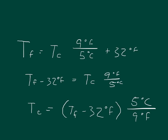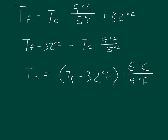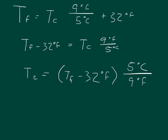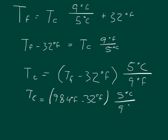You have to remember to put this in parentheses because you're distributing — multiplying both terms by 5 over 9. Since both terms are in degrees Fahrenheit, they cancel out to leave us in degrees Celsius. Plugging in the values: the temperature in Celsius equals 98.4 degrees Fahrenheit minus 32 degrees Fahrenheit, times 5 degrees Celsius per 9 degrees Fahrenheit. You should get 36.667 degrees Celsius.